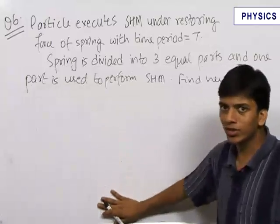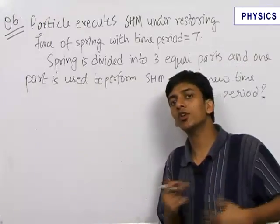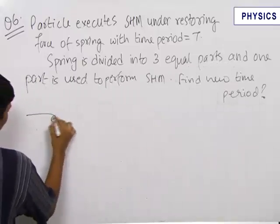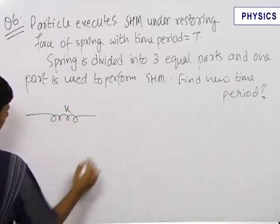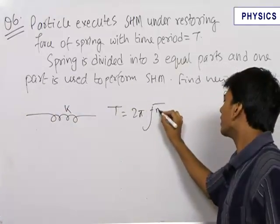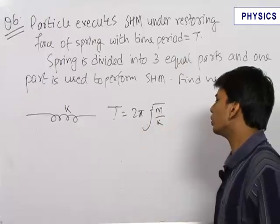For solving this question, we use the concept of what happens to the spring constant when a spring is cut. Let the initial spring constant be equal to k. Therefore, the initial time period of SHM was 2π√(m/k). This was equal to T.